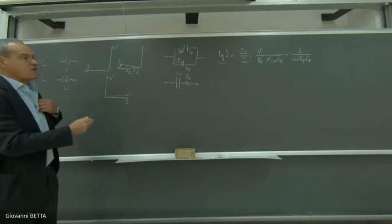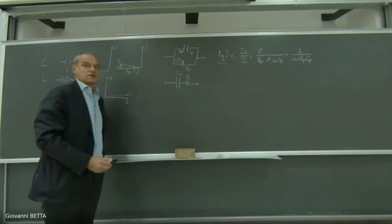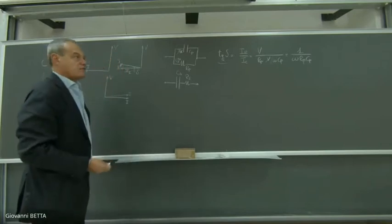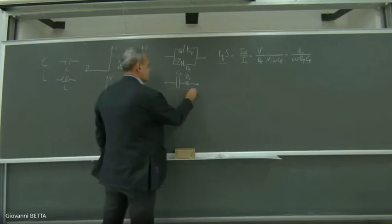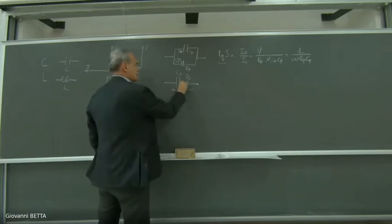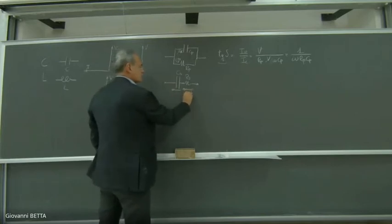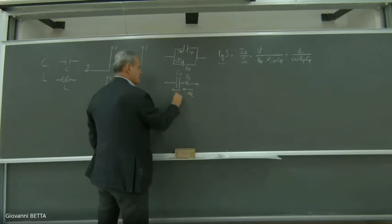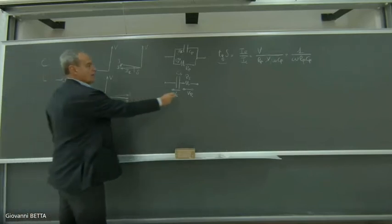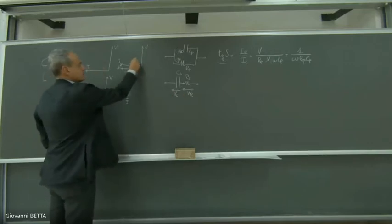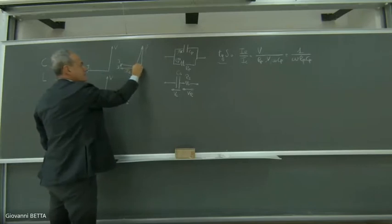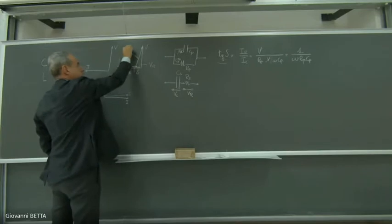Avrei potuto fare un analogo ragionamento sul modello elettrico serie, dove questa volta la corrente è la stessa che fluisce in entrambi i dispositivi, mentre le cadute di tensione su R_S e C_S sono due cadute che complessivamente arrivano a V. Una caduta V_R è in fase con la corrente, e una caduta V_C è a 90 gradi rispetto alla corrente, ottenendo la tensione risultante.